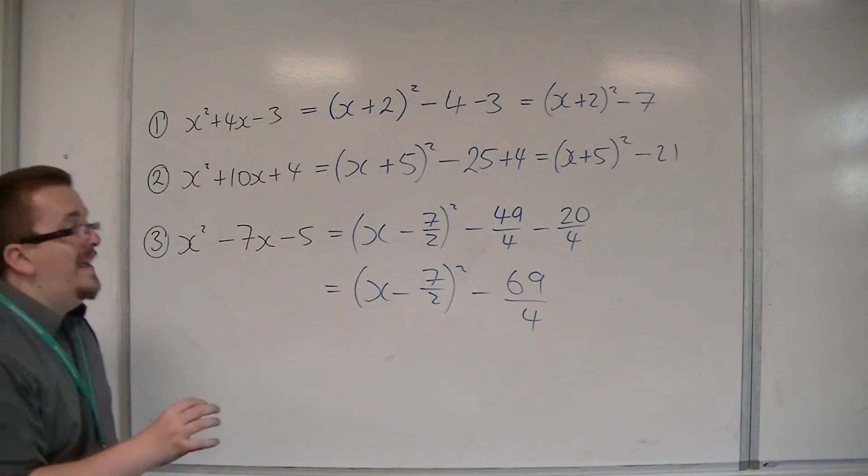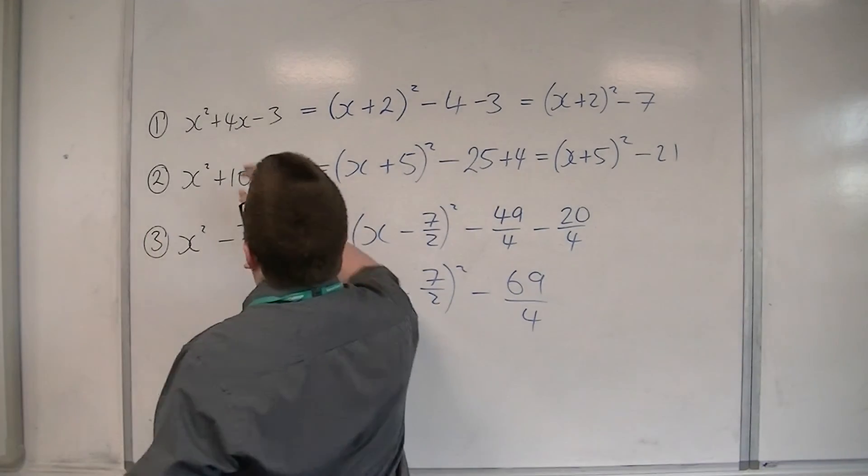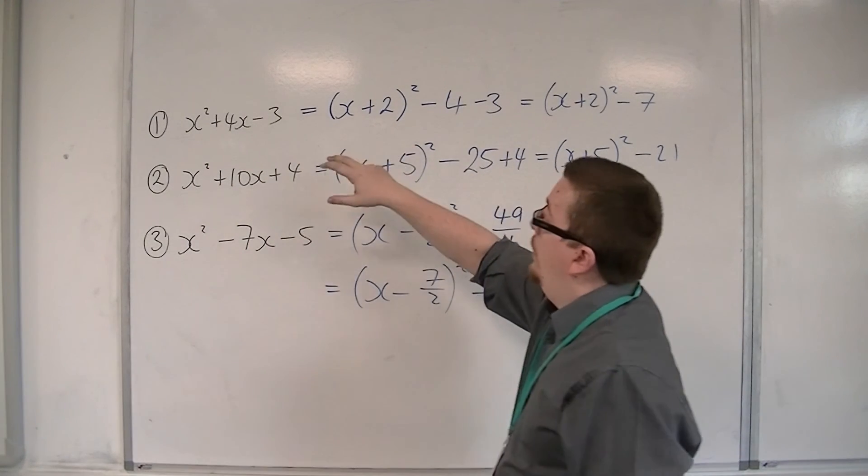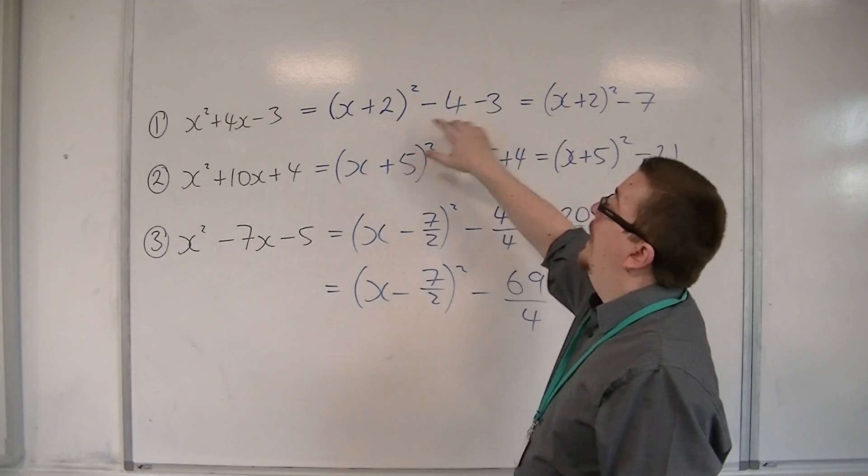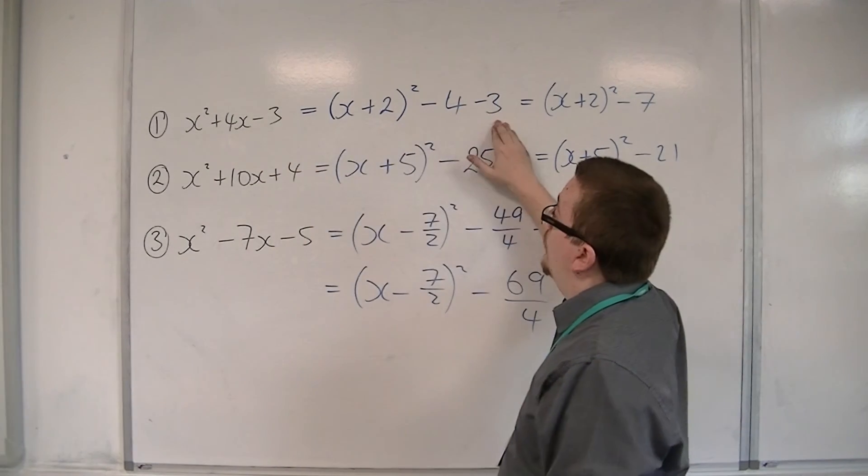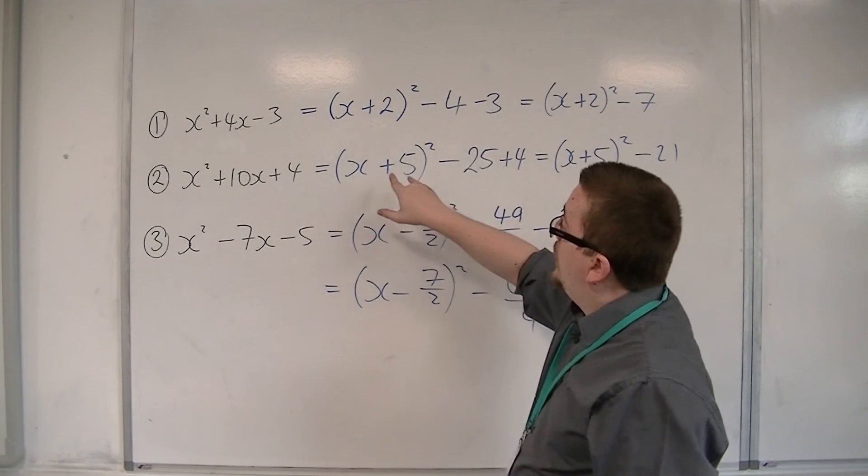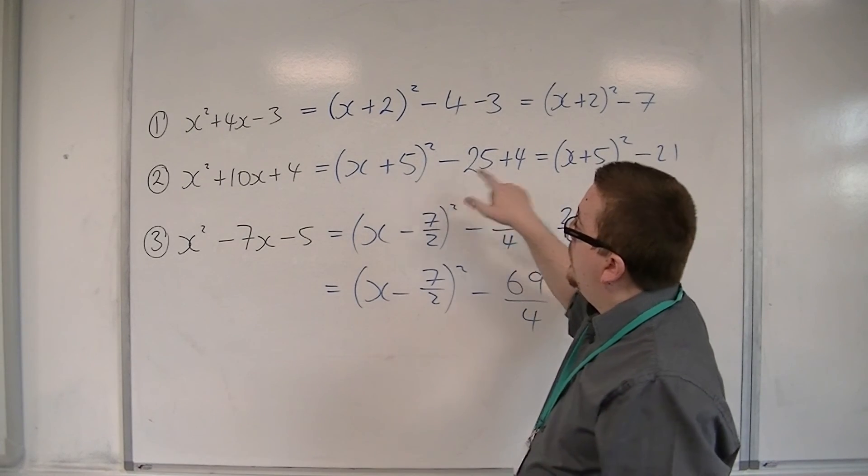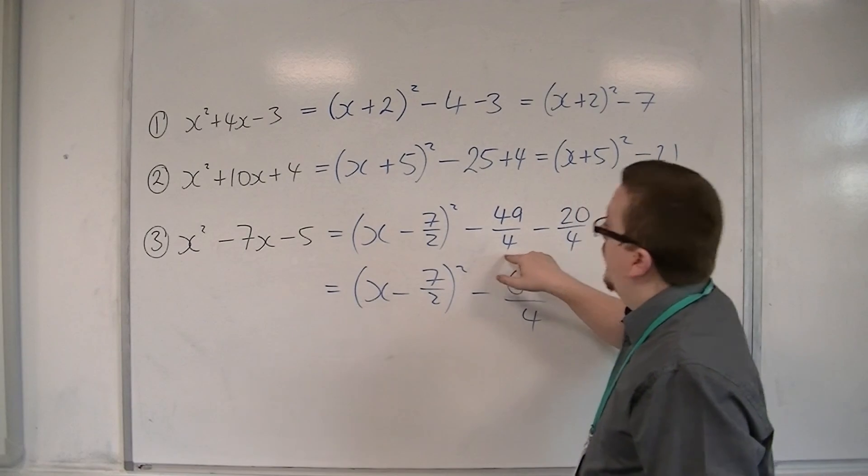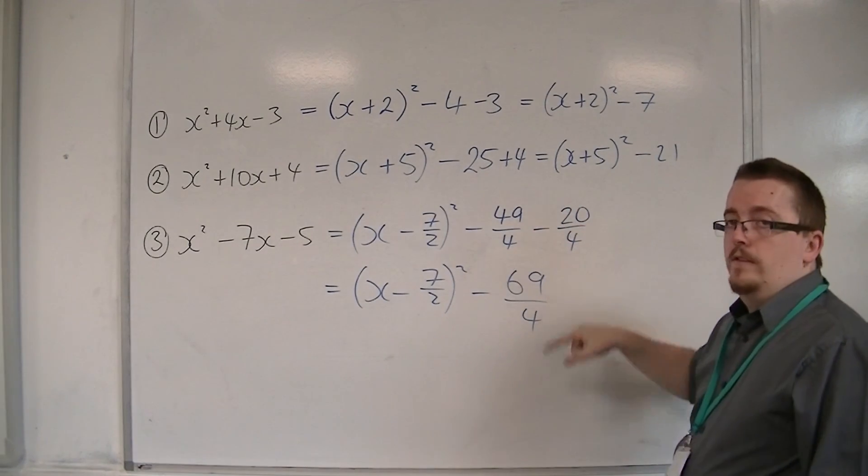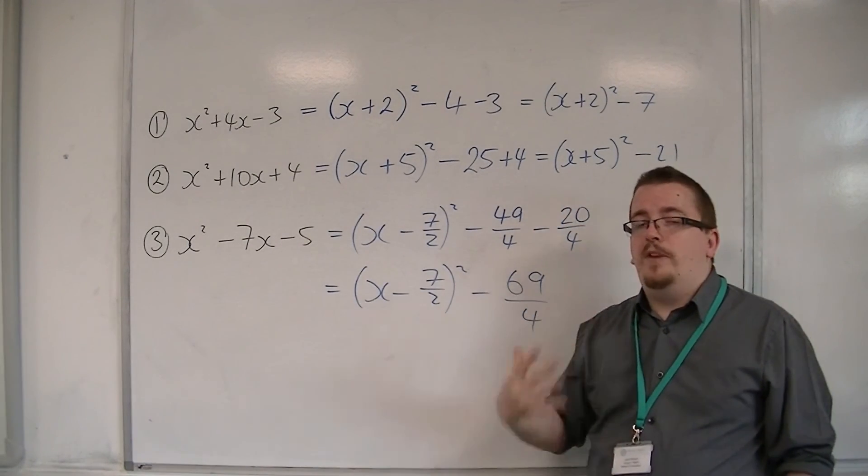So each time, it's the same process. You halve that number. So half 4, you get 2. Take away the square of that number. And then you've got the minus 3 still on the outside. So each time, take away the square of that number. And you've got the 4 on the end. Take away the square of that number. And you've got the minus 5 on the end. It's the same steps each time.